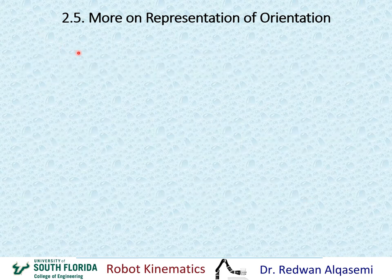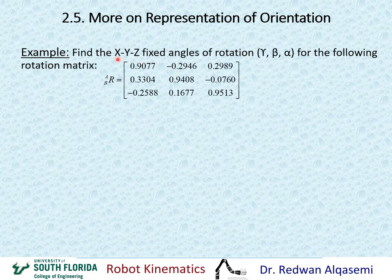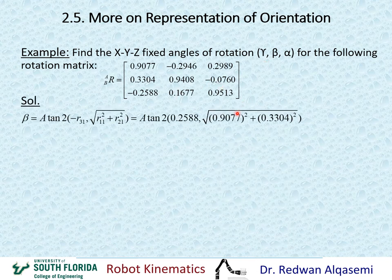Now let's take an example of the opposite problem: find the x, y, z fixed angles of rotation — gamma, beta, and alpha — for a given rotation matrix. The rotation matrix R_{B/A} is given as a general matrix with numeric elements. We use beta = atan2(-R31, sqrt(R11² + R21²)) and already have all the needed elements.